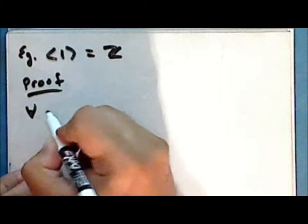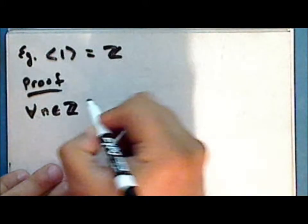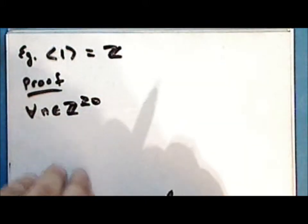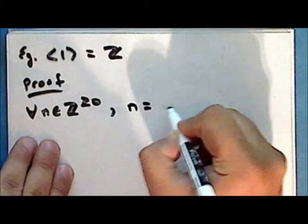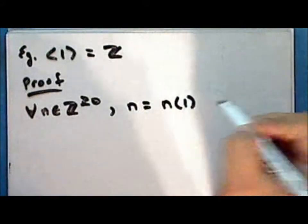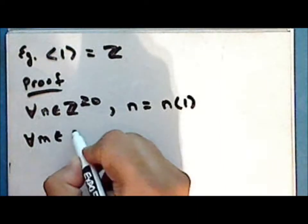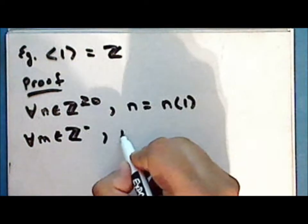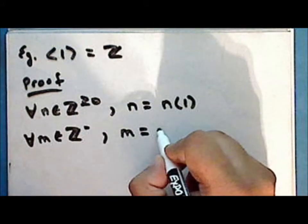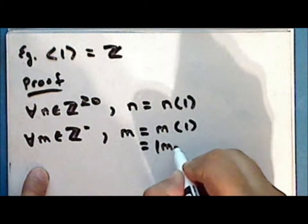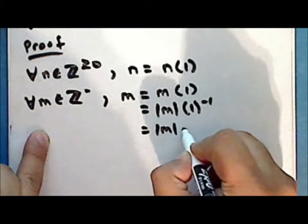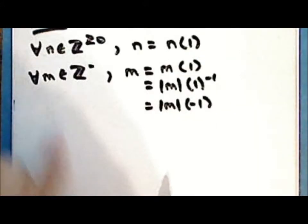So let's prove this is true. For every non-negative integer n, we have that n is equal to n times the element 1. For every negative integer m, we have that that integer is equal to m times 1, which is the same as the absolute value of m times the additive inverse of 1, which is the absolute value of m times negative 1.